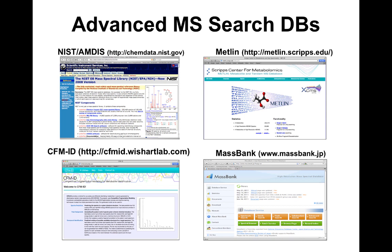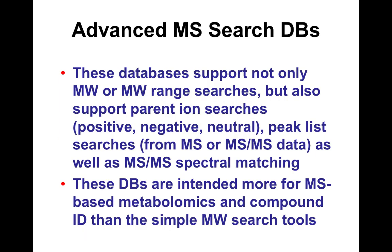More advanced searches allow you to search not just by mass or mass range, but with spectral matches or by accounting for adducts and adduct variants. NIST has databases for QTOF and ion trap, METLIN has a variety of QTOF and ion trap spectra, and MassBank also provides spectral matching. Another tool called CFMID allows not just simple mass searches but parent ion peak list searches as well as spectral matching.